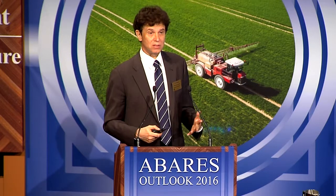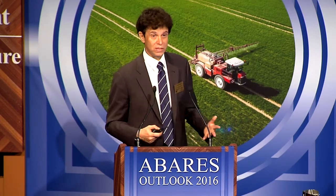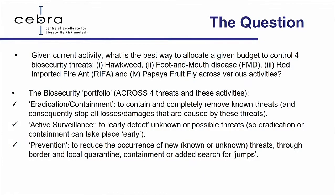Can this be implemented practically? We did a pilot study for the National Biosecurity Committee to see whether we could allocate monies across different measures and different kinds of invasives or pests. We started with $26 million and looked at things we've been doing for decades: hawkweed, fruit fly, papaya fruit fly, foot-and-mouth disease, and red imported fire ants.